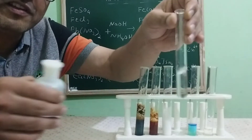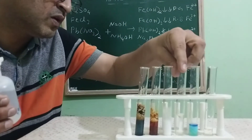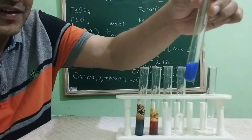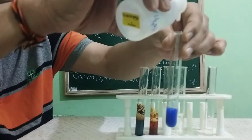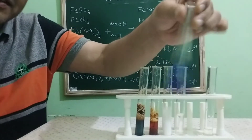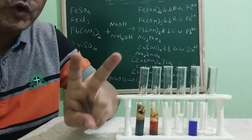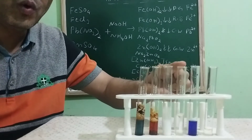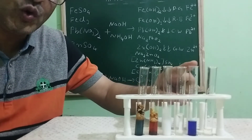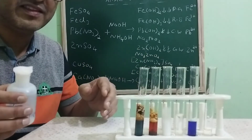This solution is nothing but tetraamine zinc sulfate, which is colorless. Now to Cu(OH)2, I will add a little more ammonium hydroxide — we got a beautiful inky blue color. This inky blue solution is nothing but tetraamine copper sulfate. So out of these five precipitates, only two are soluble: Zn(OH)2 to form colorless tetraamine zinc sulfate, and Cu(OH)2 to form inky blue tetraamine copper sulfate. I hope you have understood all these things.